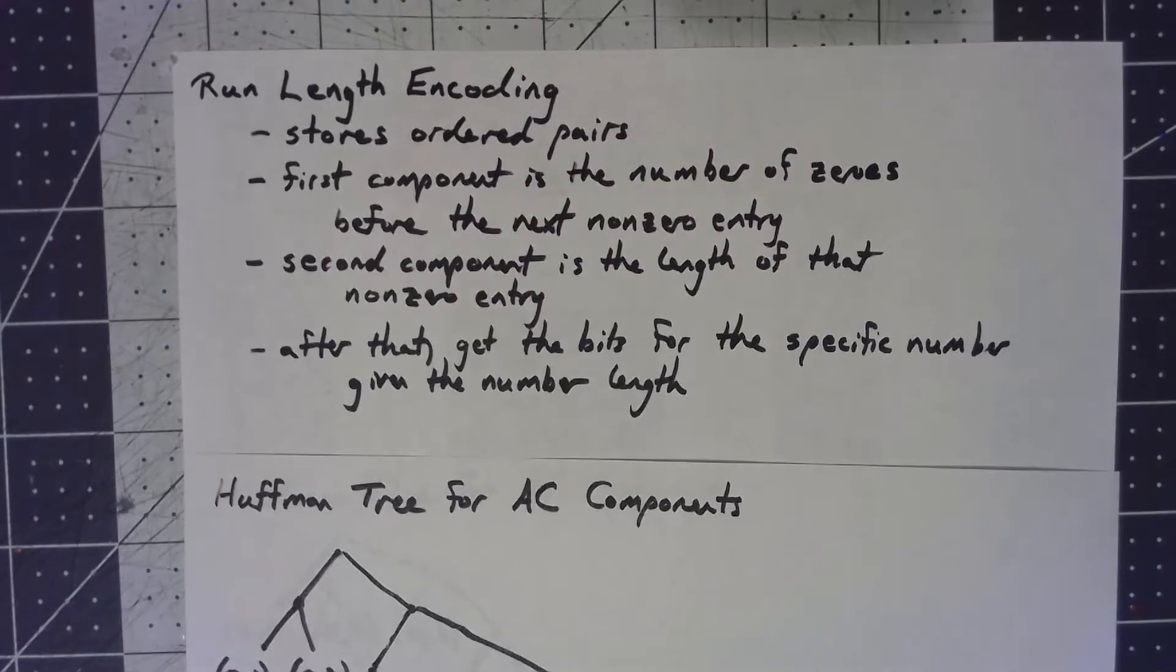Where the first part of the ordered pair is the number of zeros in between where you are and the next non-zero entry. Then the second one encodes the length of that non-zero entry, just like we did for the DC component.